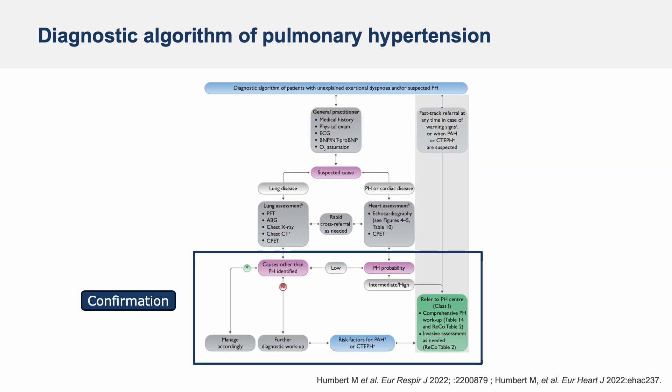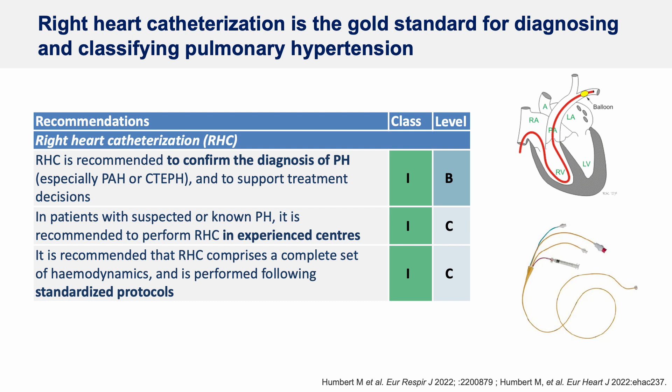This is the third step of the algorithm: confirmation of the disease, which requires right heart catheterization. Right heart catheterization is considered the gold standard for diagnosing and classifying pulmonary hypertension. It is recommended to perform right heart catheterization in experienced centers, which is why some patients will be referred to another hospital for this procedure.